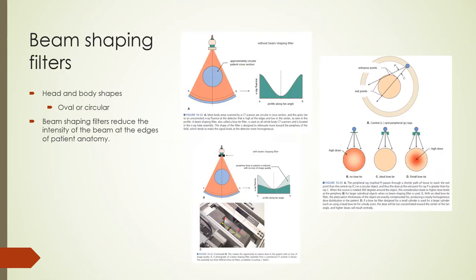Most CT scans are of the head and torso area, divided into chest, abdomen, and pelvis. These anatomies are oval or circular in shape and attenuate the X-ray beam to different extents. To account for this uneven attenuation, manufacturers use beam shaping filters — called bow tie filters — to equalize the beam over the face of the detector. Figures show the beam profile without the filter, the effect of the filter on flattening the beam, and scenarios with no bow tie, an ideal bow tie, and a small bow tie filter.